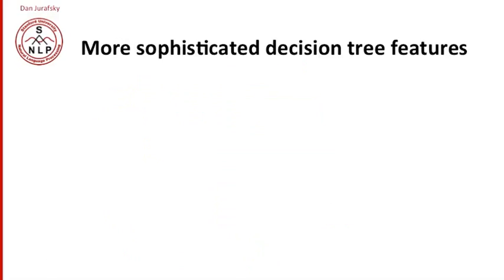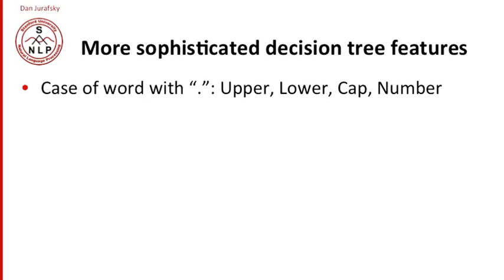And you can imagine arbitrarily sophisticated decision tree features that we could use. So one thing we can use is the case or word shape of the word with a period. Am I an uppercase word? Am I a lowercase word? Am I all caps? So uppercase meaning the first letter is uppercase. Lower meaning it's lowercase. Cap meaning it's all caps. Am I a number? Any of these word shape features can give us information.